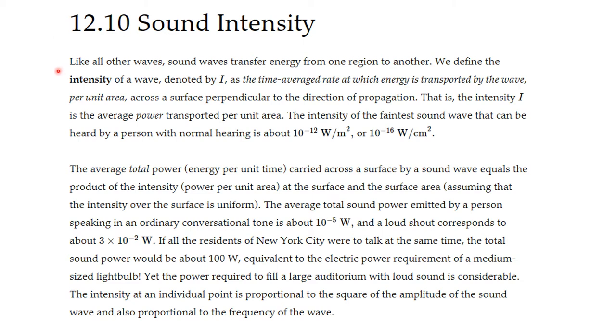Sound intensity. Like all other waves, sound waves transfer energy from one region to another. We define the intensity of a wave, denoted by I, as the average rate at which energy is transported by the wave per unit area across the surface perpendicular to the direction of propagation. That is, the intensity I is the average power per unit area. The intensity of the faintest sound wave that can be heard by a human with normal hearing is about 10 to the minus 12, and this will come in power watts per square meter.